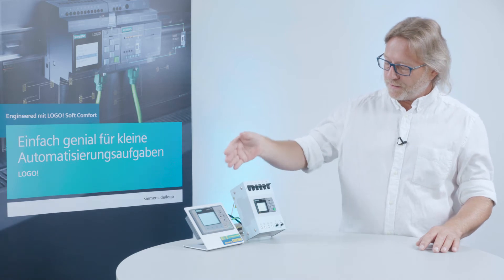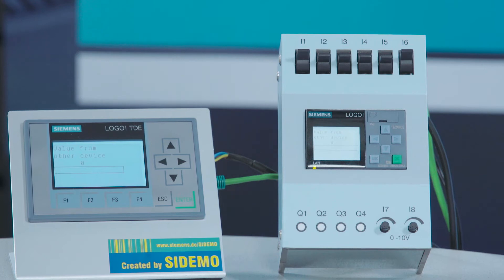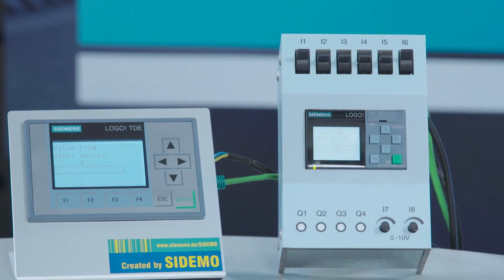I have created a little demo system here. I can influence the analog inputs 1 and 2 using this checkbox. I have also included a TDE that shows the same information on the display as the logo.